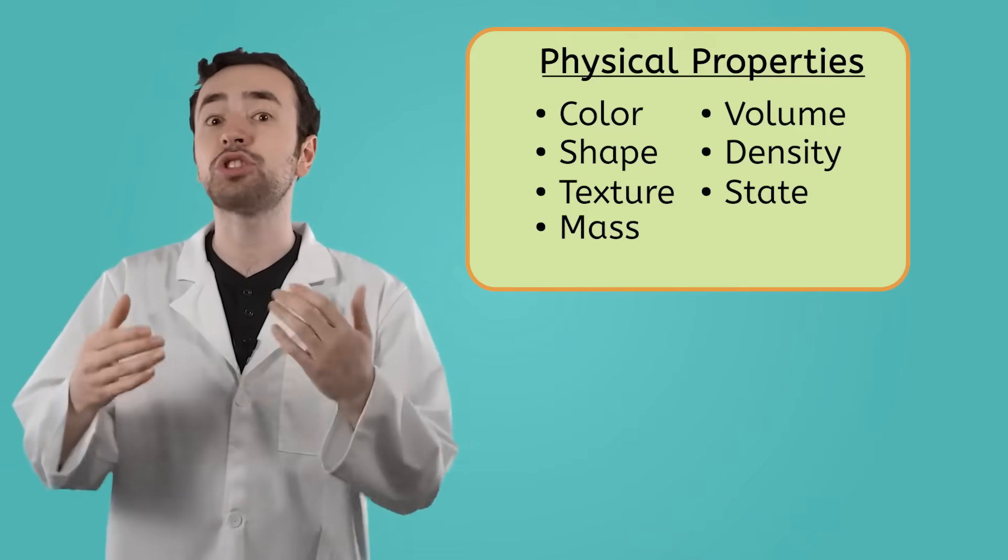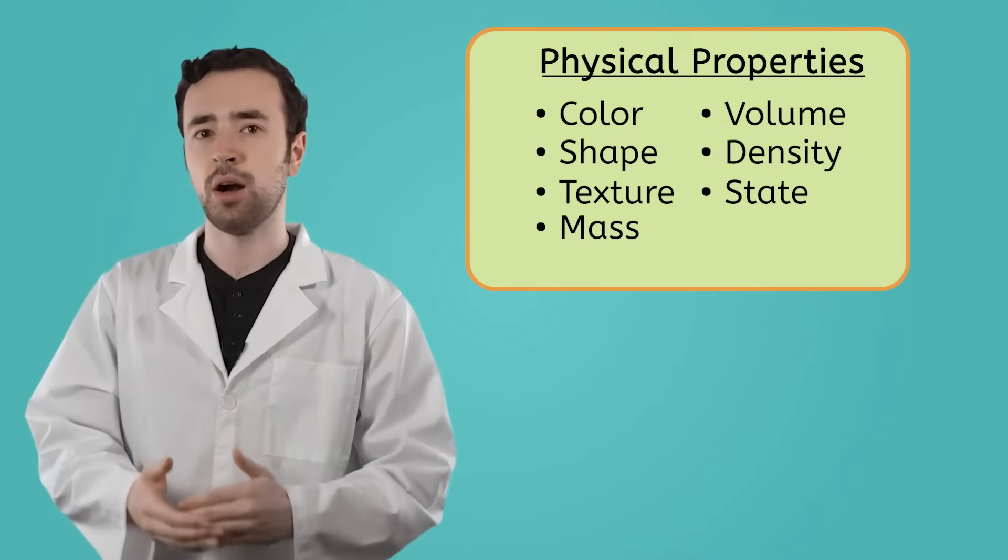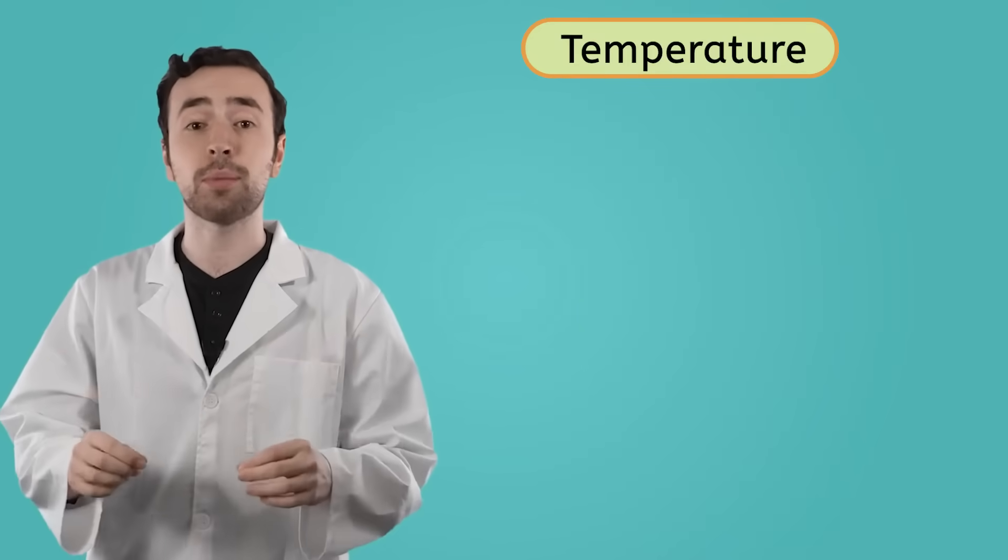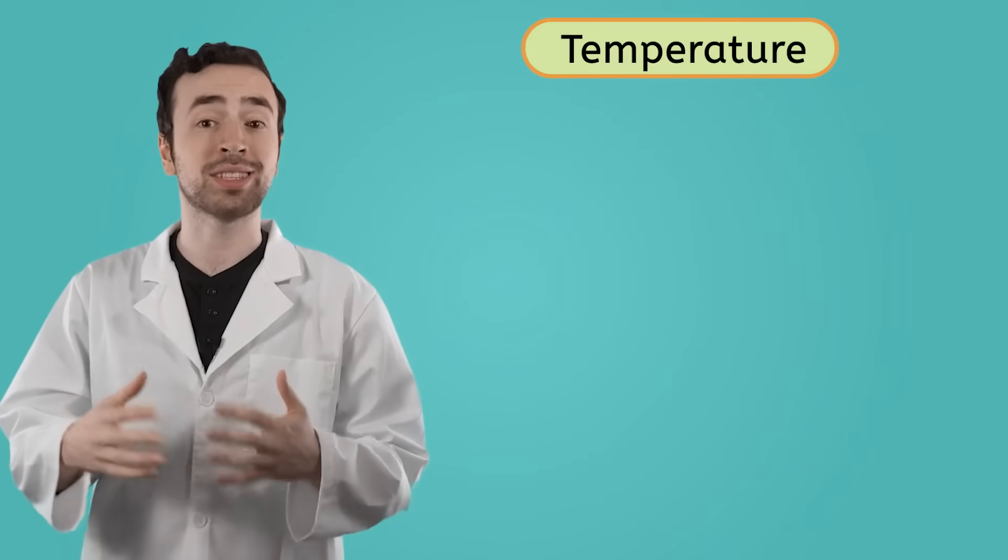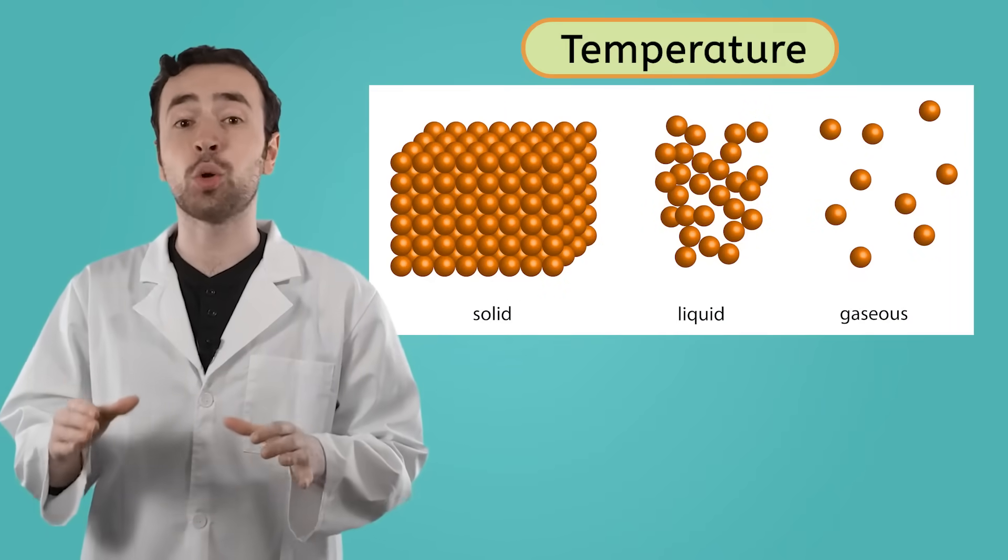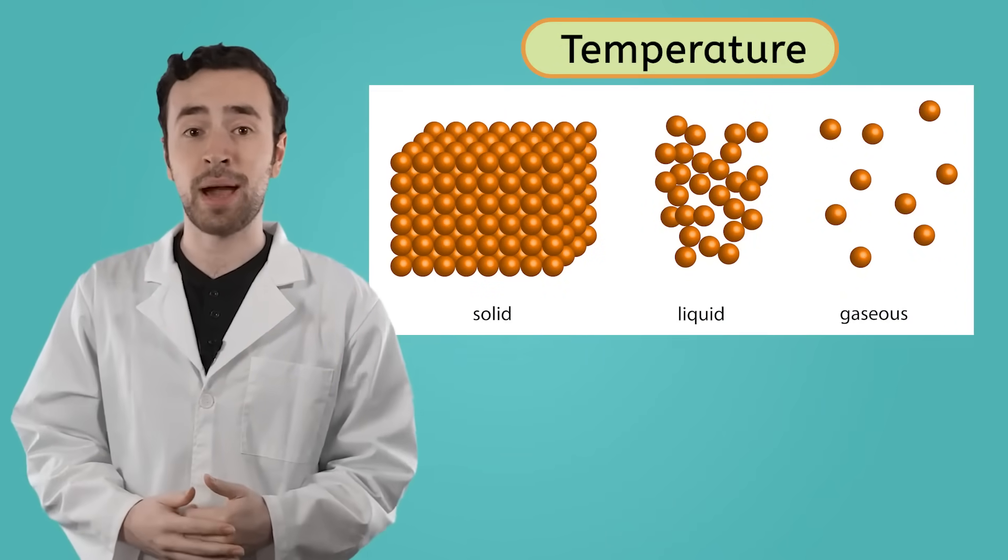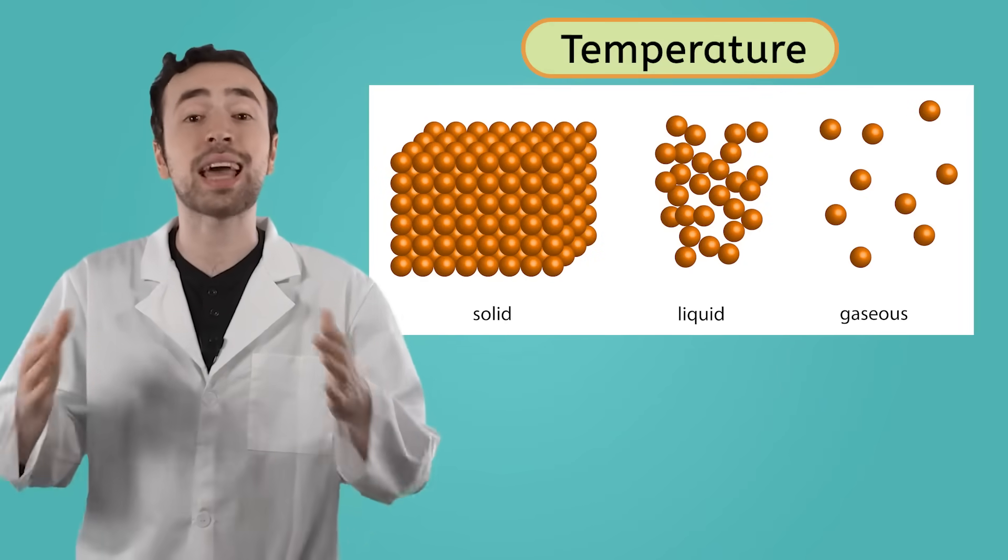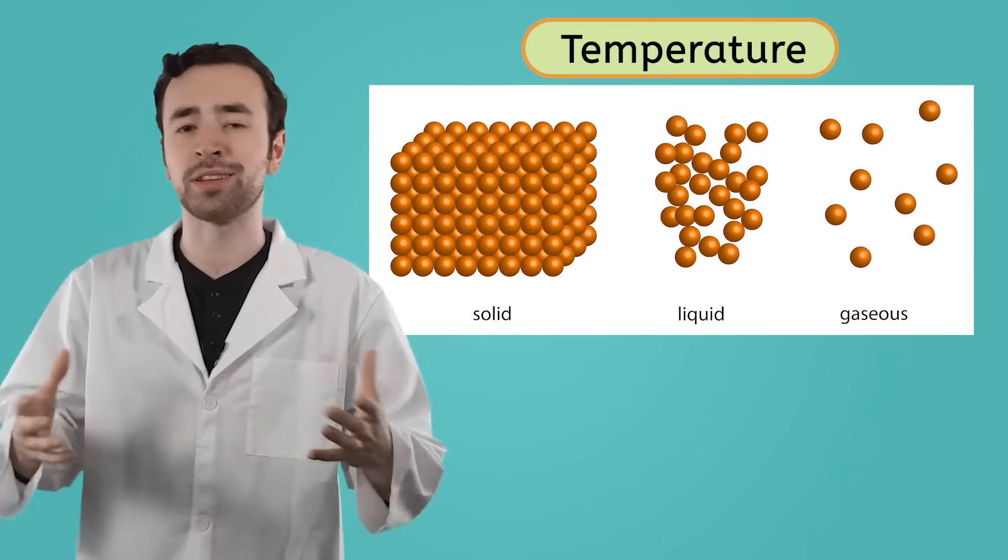They can all be observed without changing the identity of the matter. Another physical property of matter is the temperature at which it changes states. State changes are a physical property because they don't change the identity of the matter. It's still the same matter, its atoms are just rearranged in a different way.